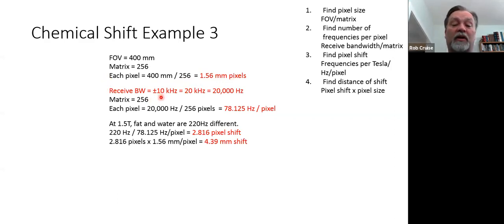Your received bandwidth, we're going with a received bandwidth of plus and minus 10 kilohertz. So that is a total frequency range of 20 kilohertz. We change that into hertz, which is 20,000 hertz. We still have the same matrix of 256 that we have up here. We divide 20,000 divided by 256 and we get 78.125 hertz per pixel. We're still on that 1.5 tesla magnet, so we are going to plug in our 220. Remember 147 or 440 depending on if we're on a 1.0 or a 3.0. So 220 divided by 78.125, which we got in step two, and we work that out to be 2.816 pixels.